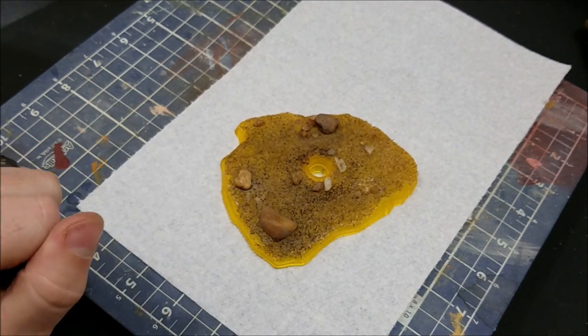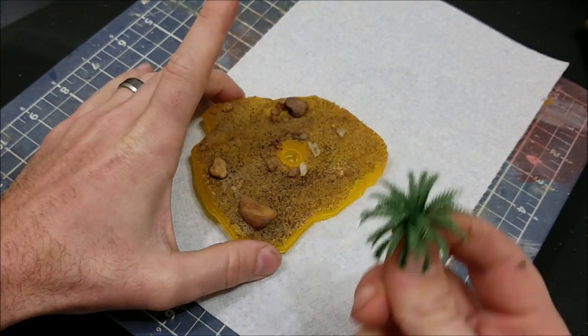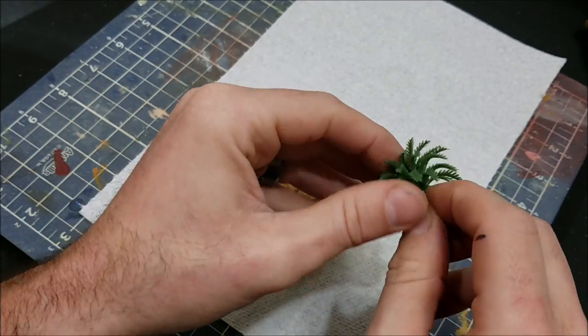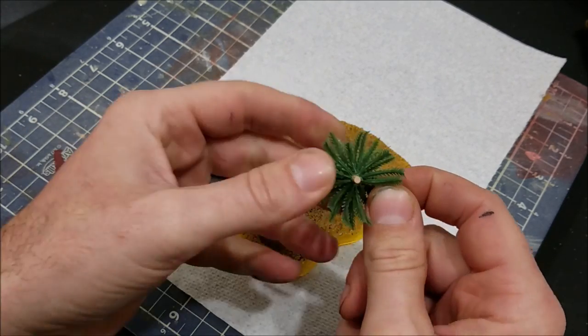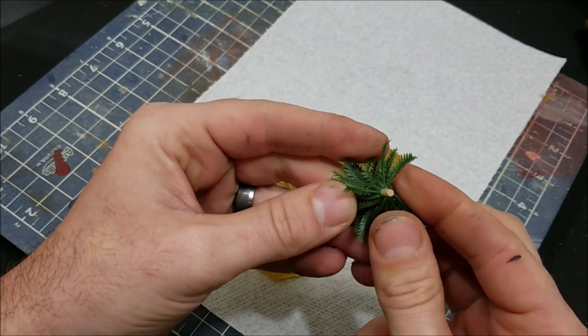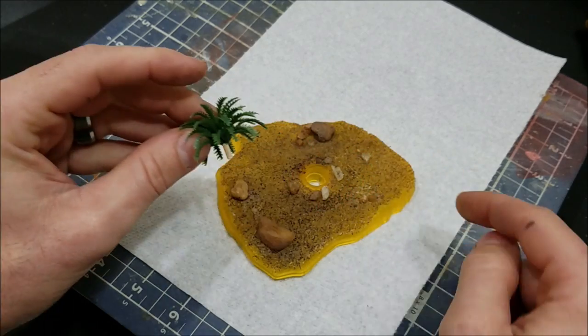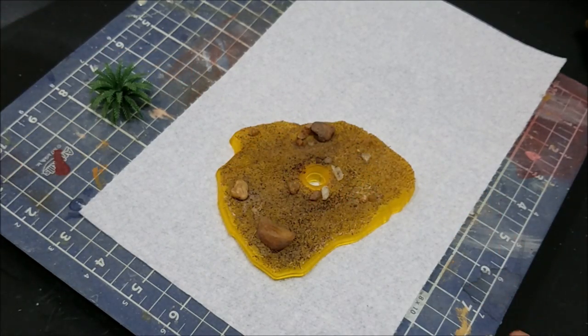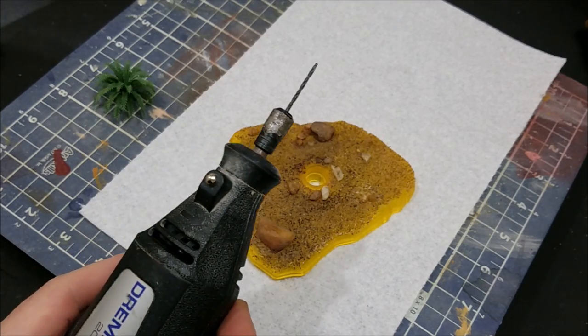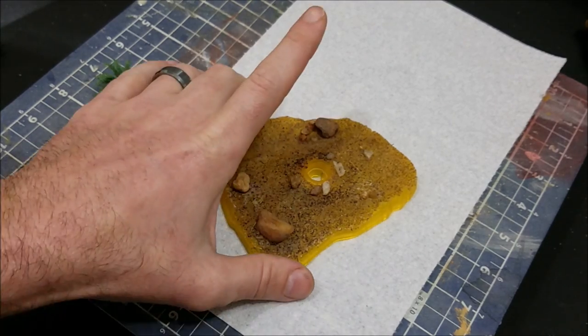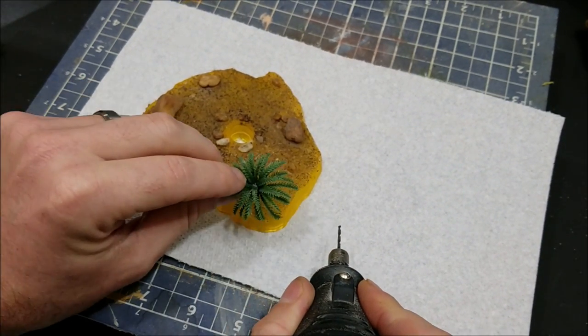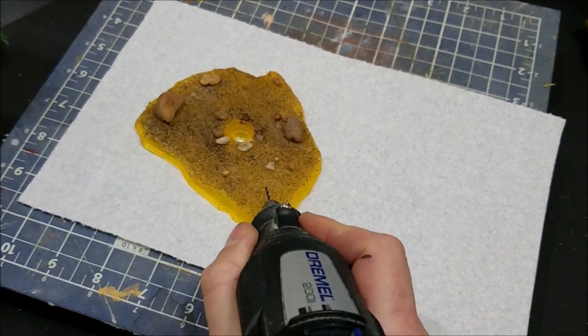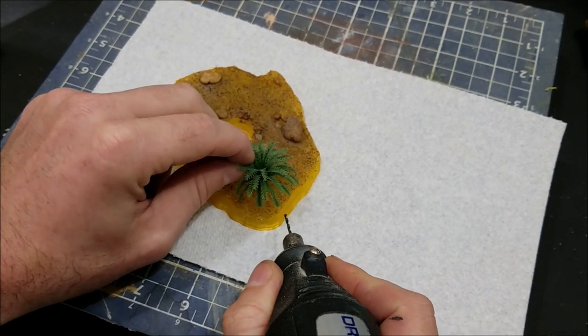Now that the epoxy has fully cured, I'm going to figure out where I want all my greenery to go. I've got these two little palm tree tops—you may have seen these before in my dilophosaurus display base video. I like to use the tops for little ferns. I'm going to take my Dremel and drill pilot holes into the base, then glue them down.